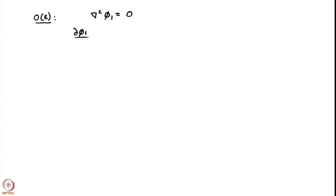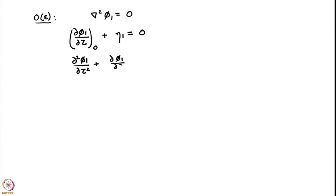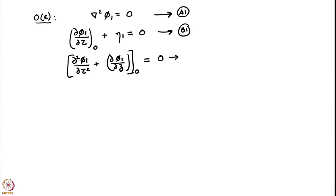So this is what we have found so far. Let me summarize the equations found until now. At order epsilon, we have our familiar equations at z=0 — I am going to skip writing z=0 explicitly since it applies at every stage, and just indicate that by a 0. We have the Bernoulli equation and a modified Bernoulli equation, also at z=0, and we call these A1, B1, and C1. A1 is the governing equation; B1 and C1 are the boundary conditions.